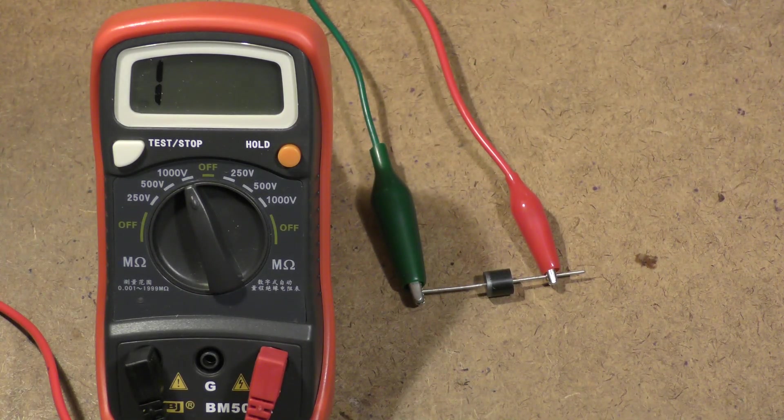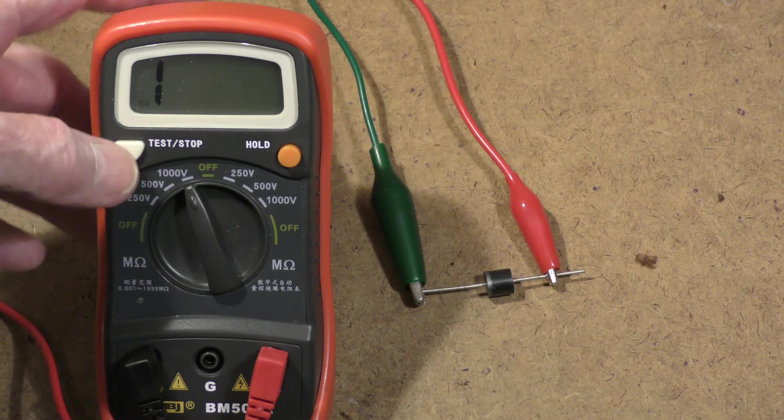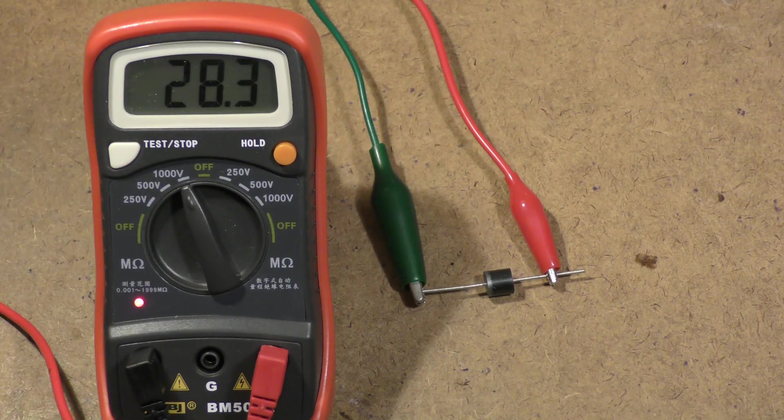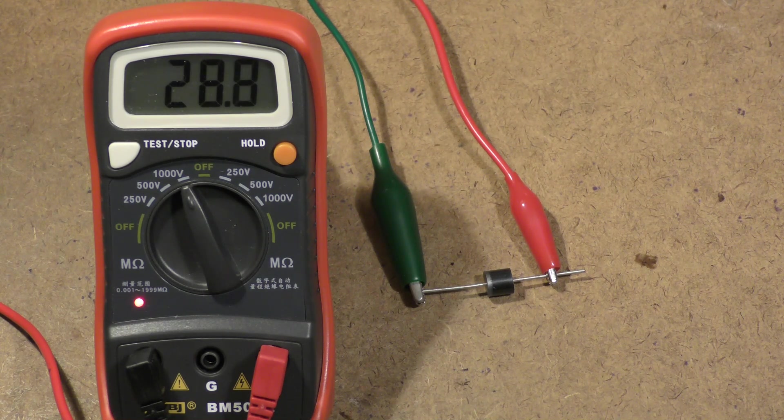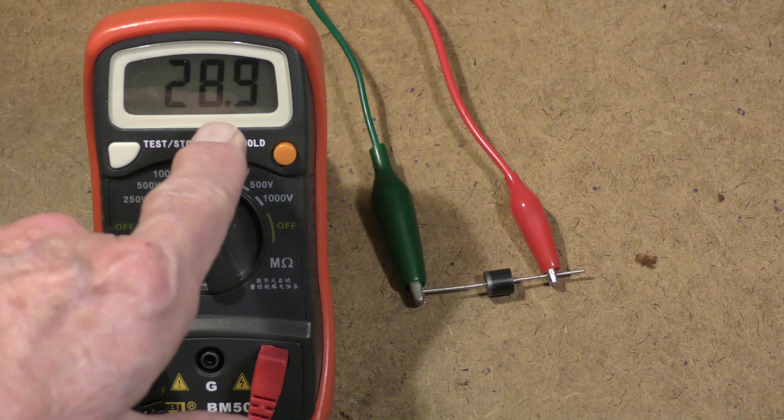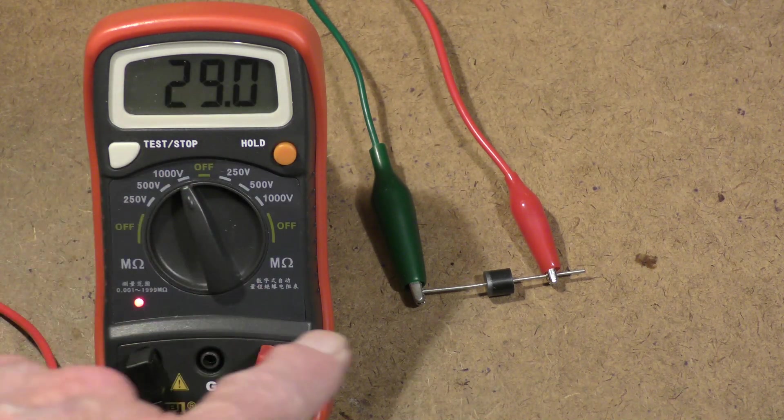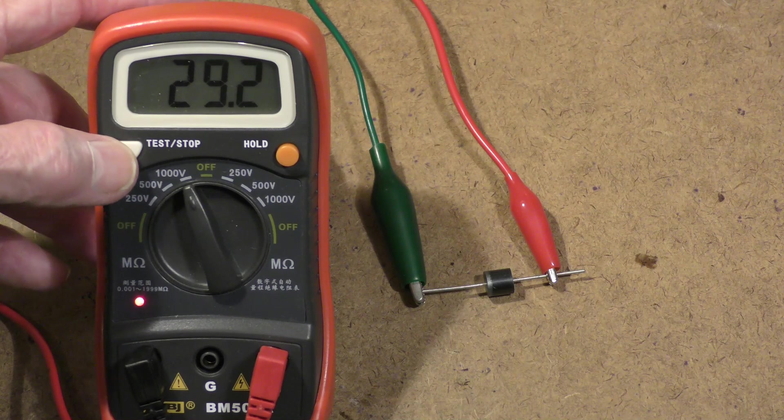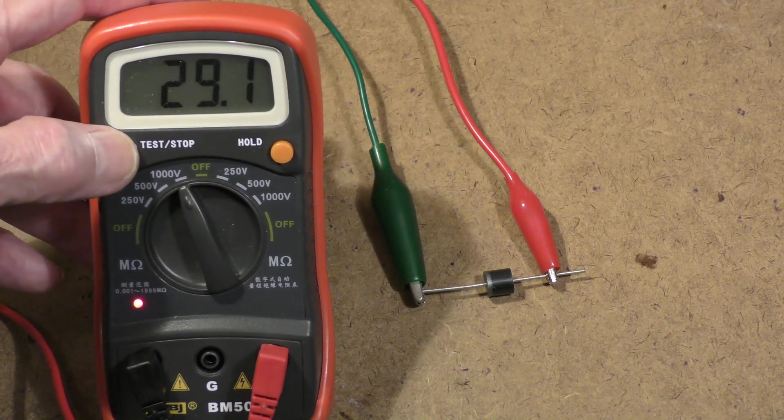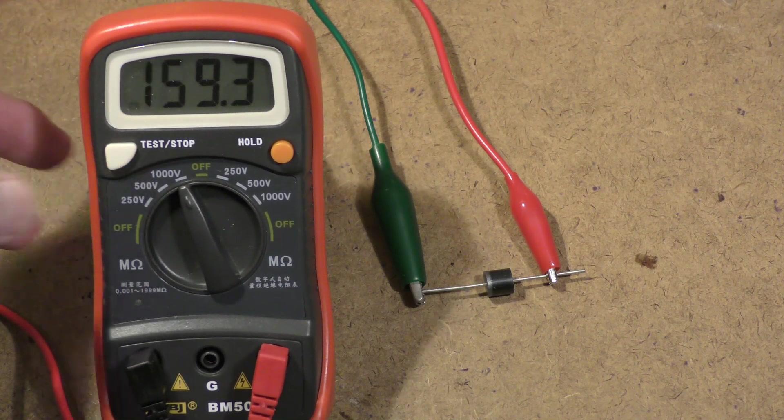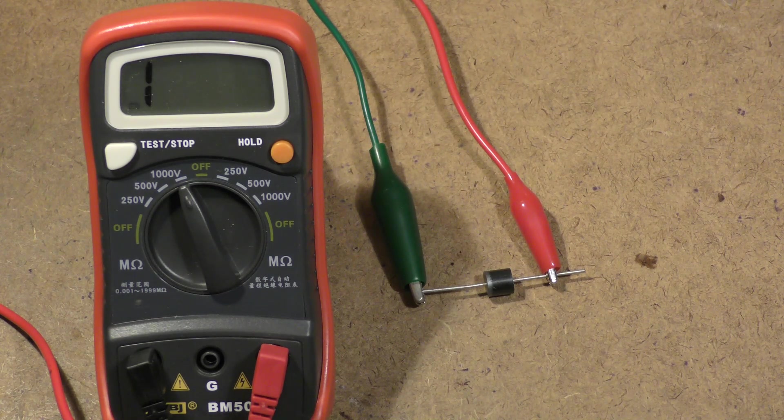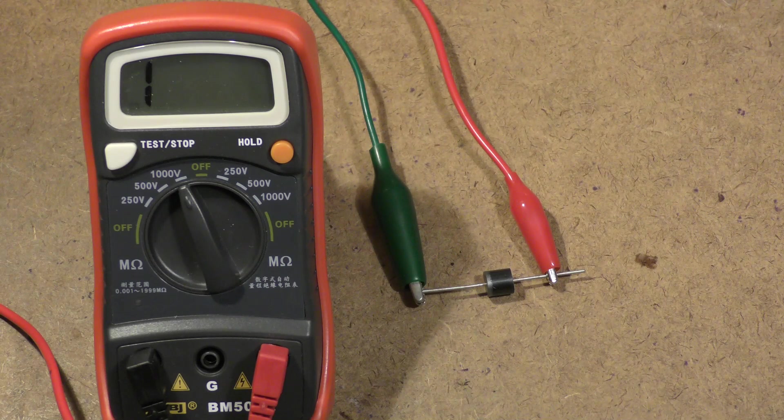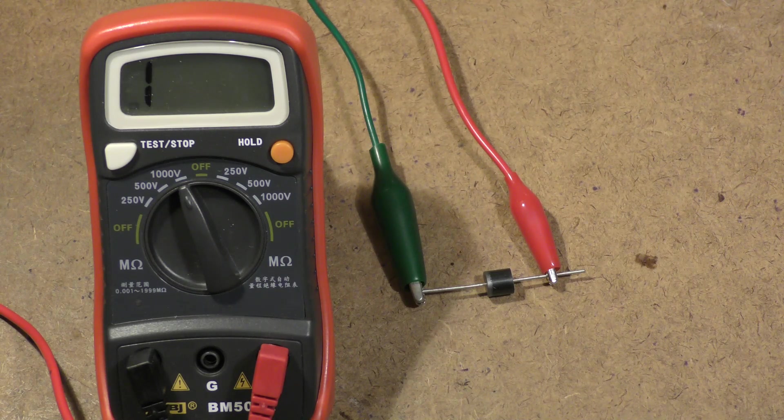We're now testing in the reverse or inverse position, and you notice this shows 28.9. So in the forward direction it was 22-23 megohm, and in the reverse direction it's only about seven megohm higher. This diode is breaking down quite a bit—it's allowing a lot more reverse current than the first one.